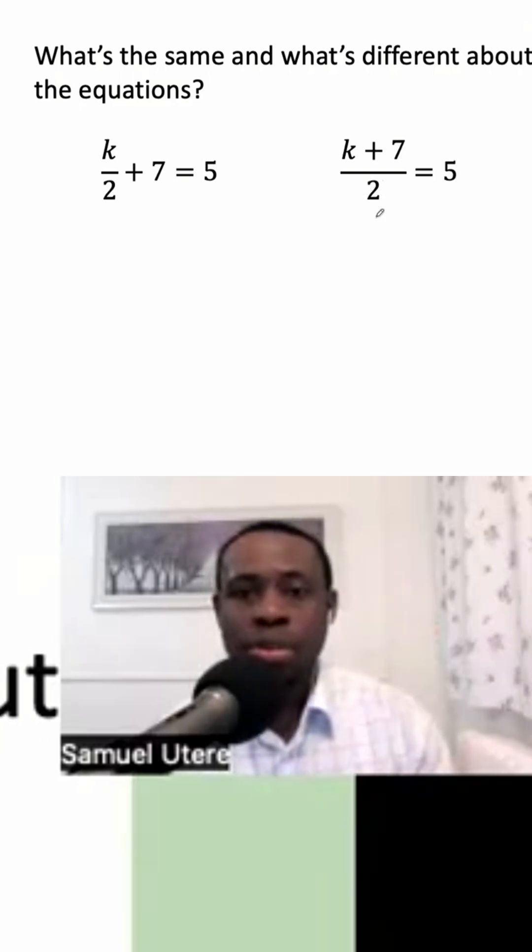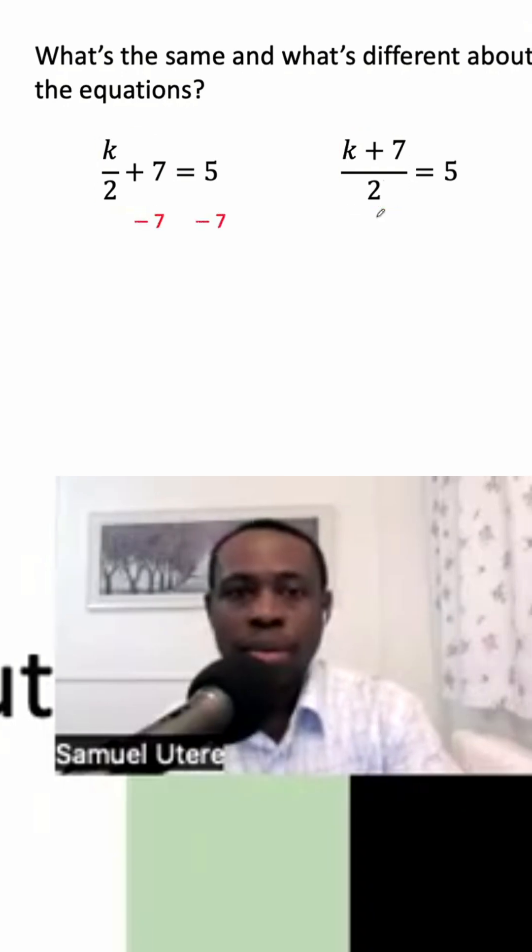Of course, it is to multiply by two. So that's what we're going to do. Here we'll subtract seven, and we're left with K divided by two equal to negative two, because five subtract seven is negative two.